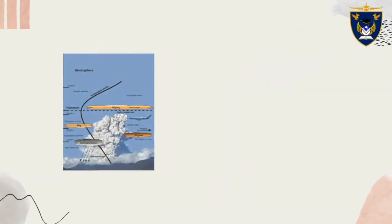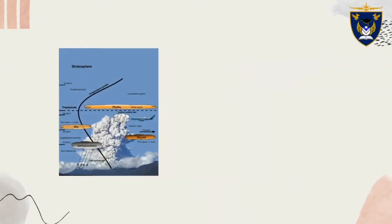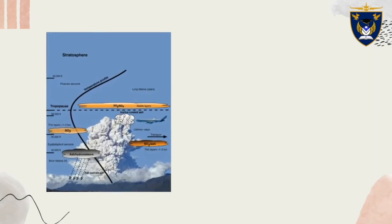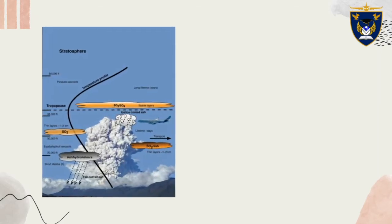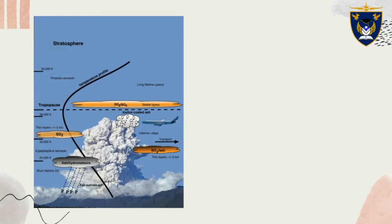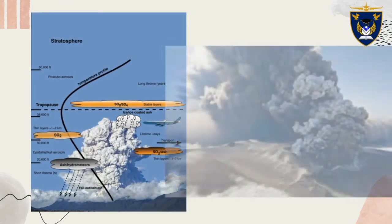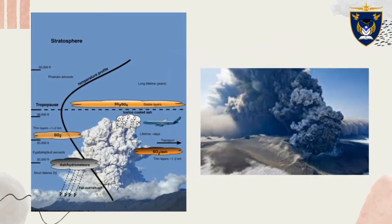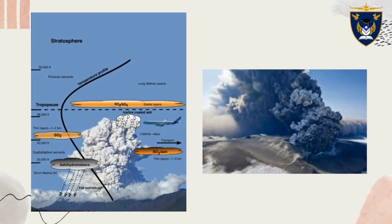The ash cloud from Iceland's erupting volcano continues to cause air travel disruptions across Europe, closing airports and stranding thousands of passengers. The cloud contains tiny particles of abrasive glass, sand and rock that pose a danger to aircraft engines and structures.